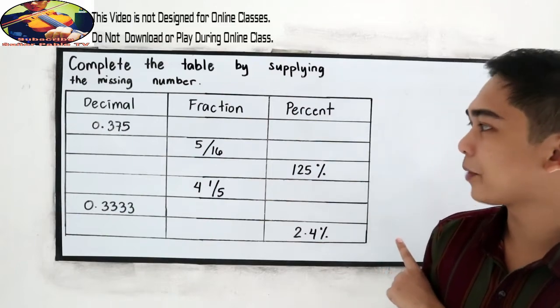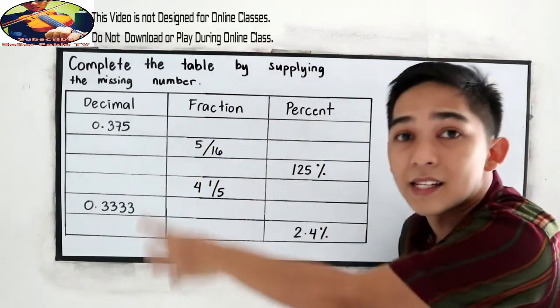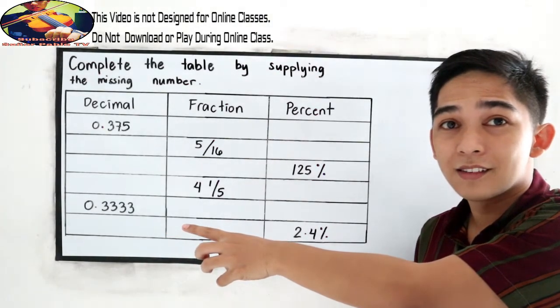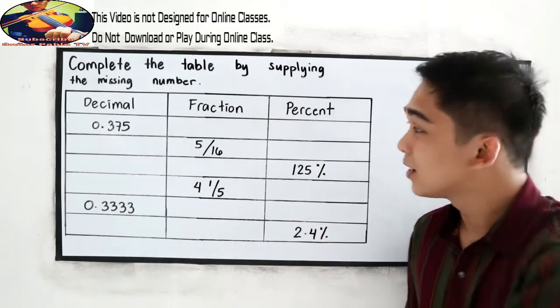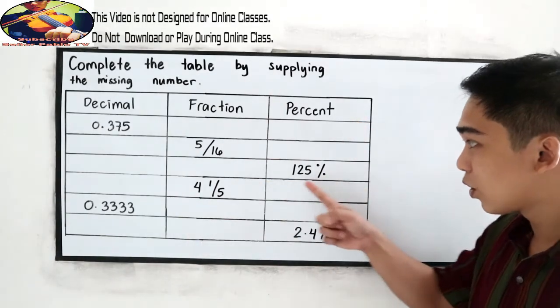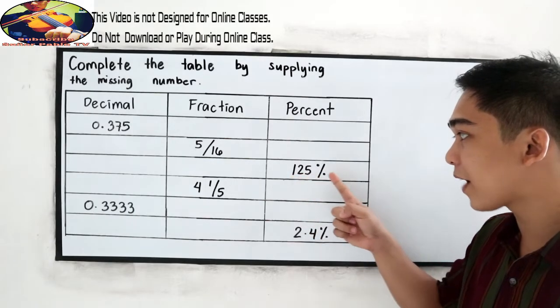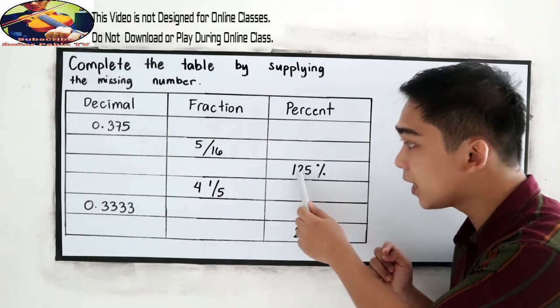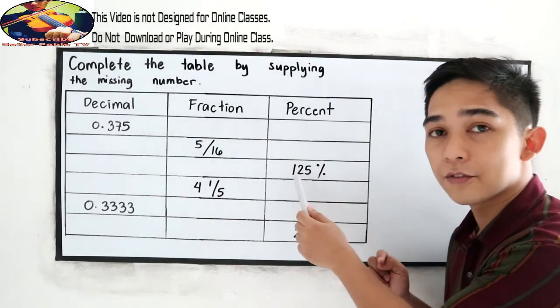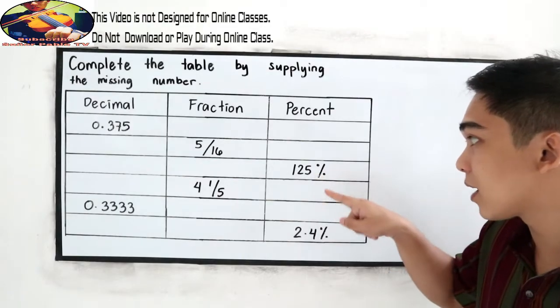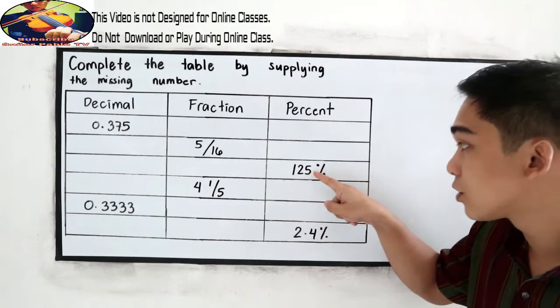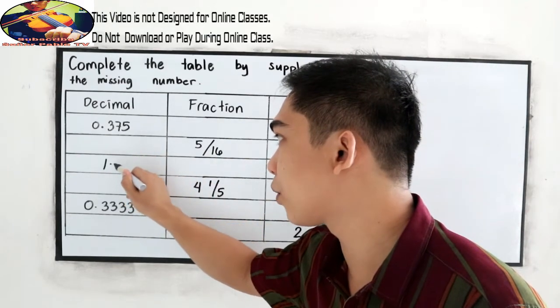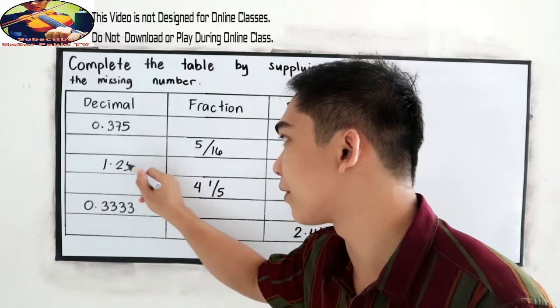The easiest problem is percent to decimal. Because we're just going to move our decimal point to the left. Just like here, 125 percent. So we're just going to move two decimal places to the left. So our decimal is located here. So 1, 2 going to the left. So in decimal, that is 1.25.